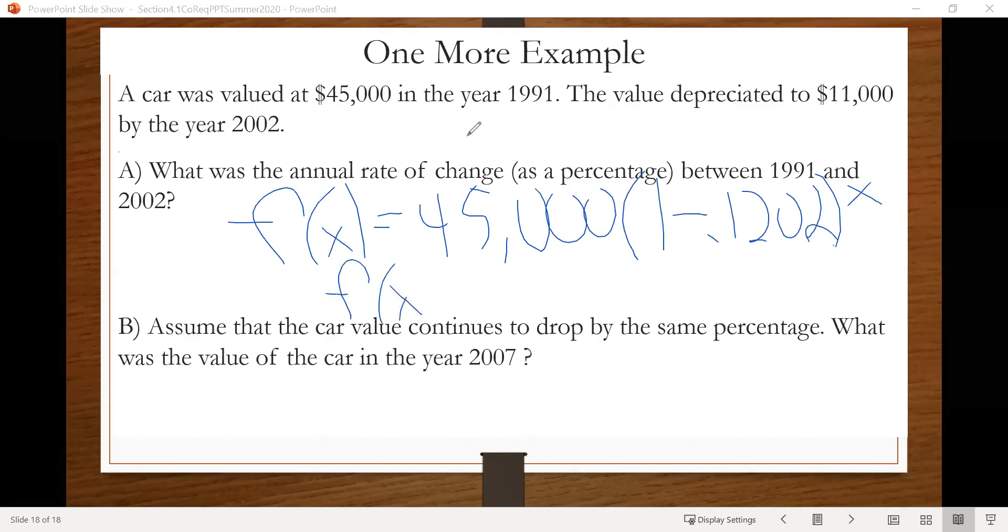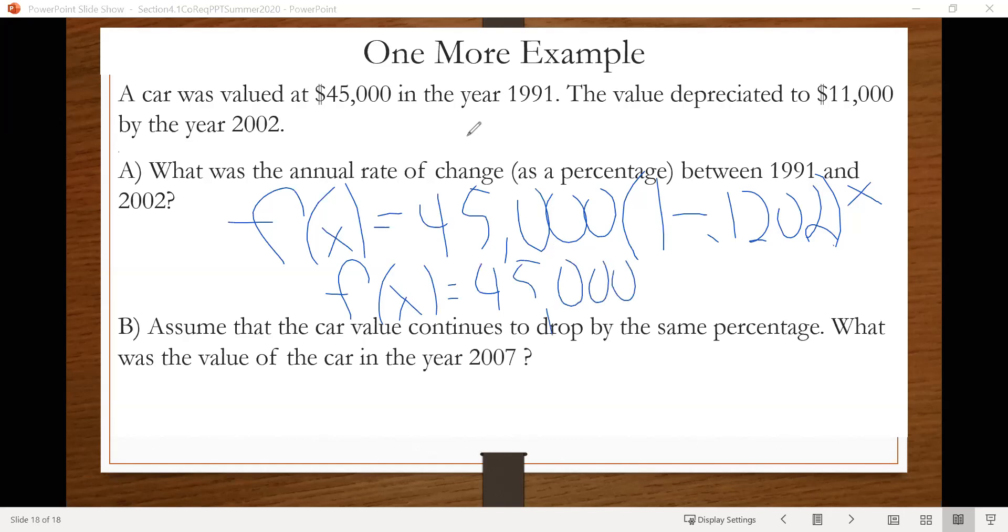And if we simplify that a little bit, we end up with F of X equals 45,000 times, we can do the one minus 0.1202. If we do that, we end up with 0.8798 to the X.